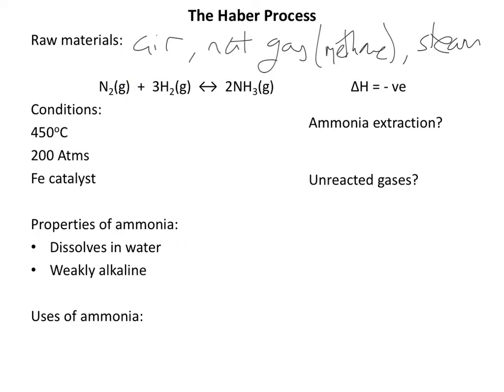We cool the air down and fractionally distil it, and that gives us nitrogen. We put those two things together at these conditions and, in a reversible reaction, we produce ammonia.